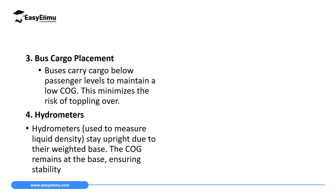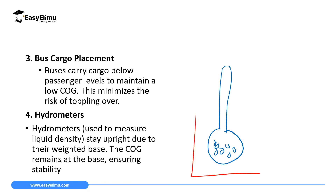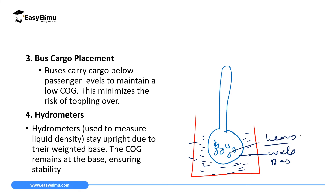A hydrometer has a very thin bulb at the top and a very wide base filled with beads at the bottom. When placed inside a container of liquid, its wide and heavy base keeps it in an upright position, allowing it to measure the relative density of the liquid with the bulb visible above the surface.